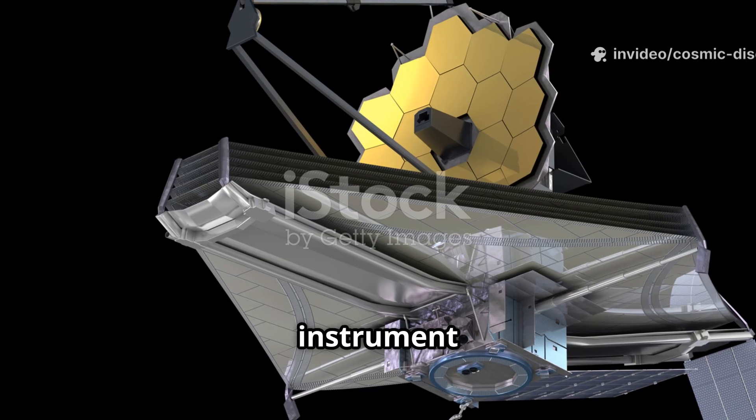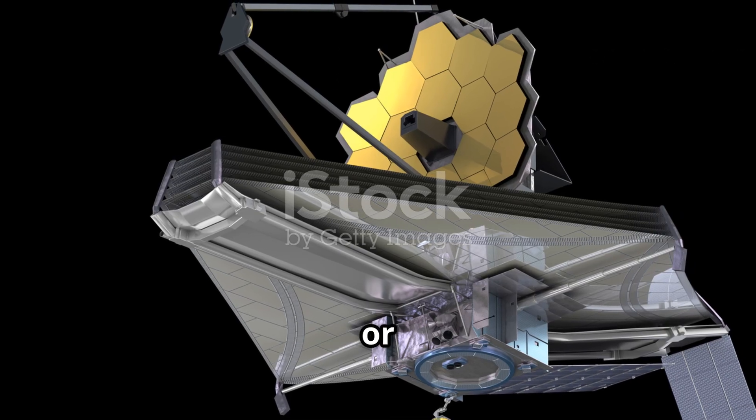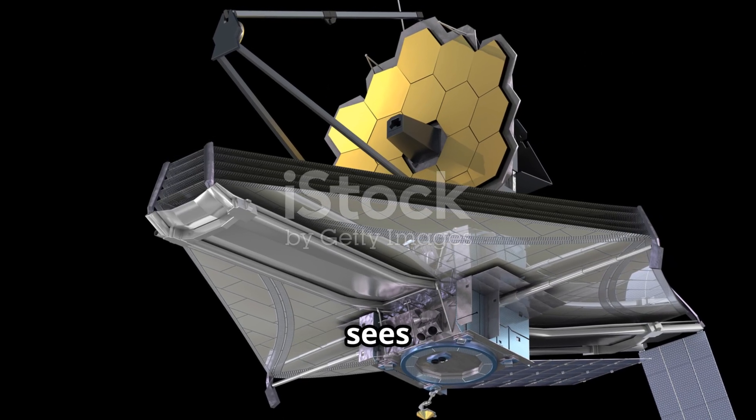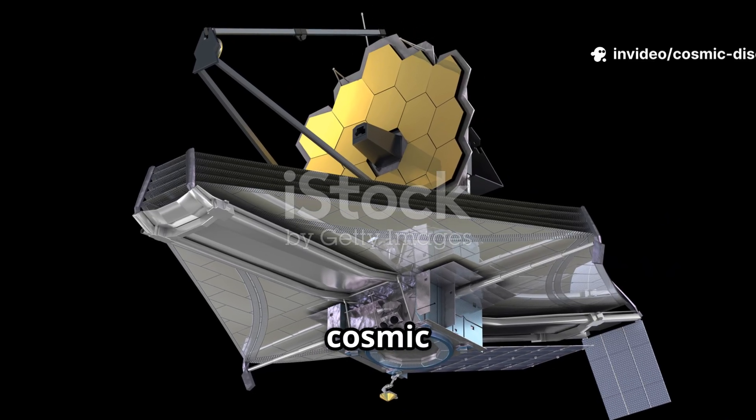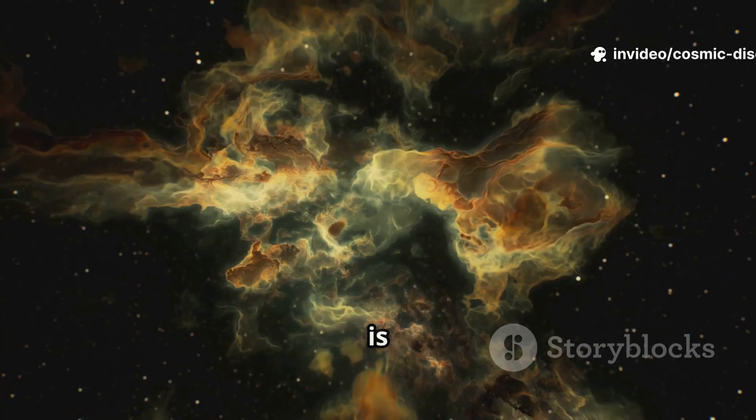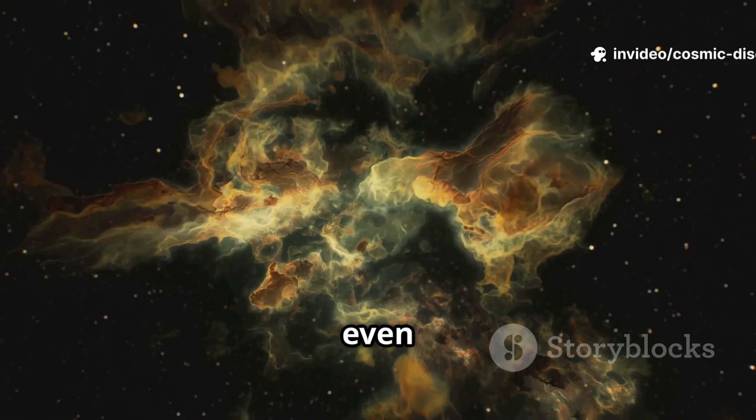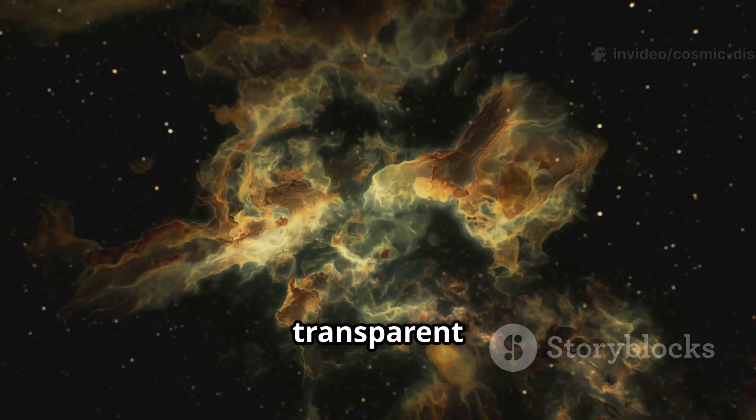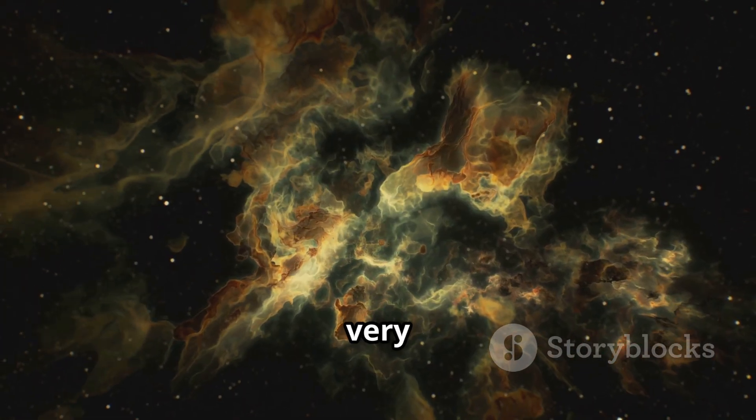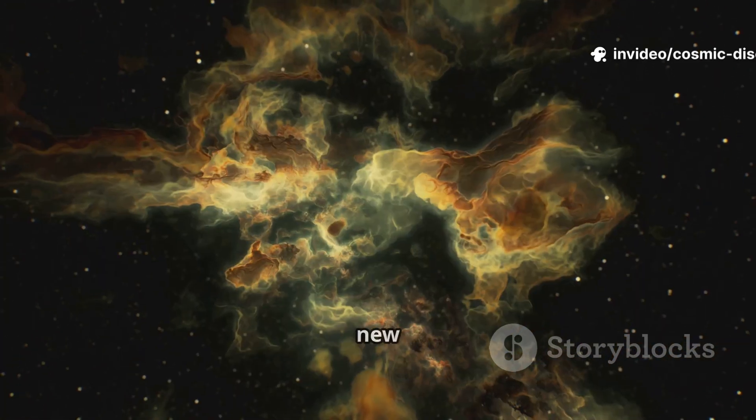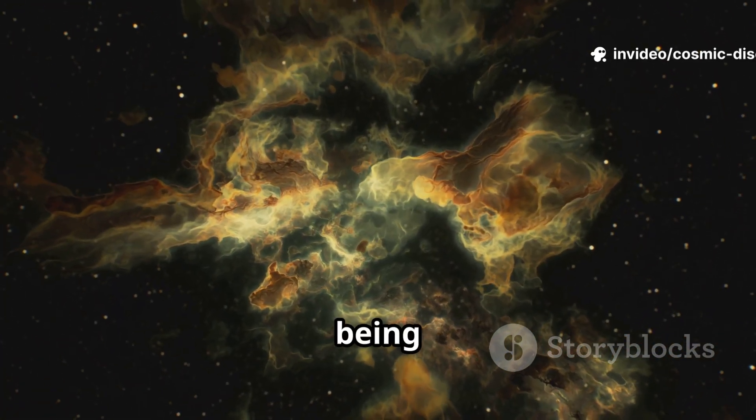Another key instrument is the mid-infrared instrument, or MIRI. This instrument sees even longer infrared wavelengths, which are crucial for peering through the thickest clouds of cosmic dust. Dust that is opaque to visible light, and even near-infrared light, becomes transparent when viewed with MIRI. This allows us to see the very hearts of stellar nurseries, where new stars and planetary systems are being born.